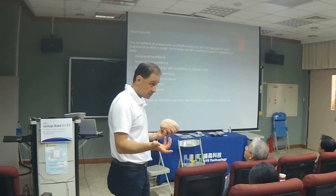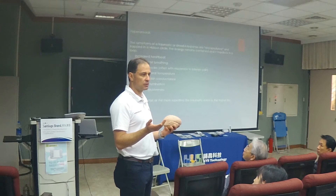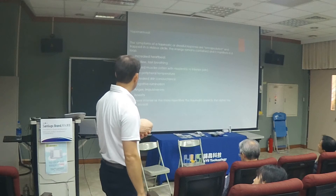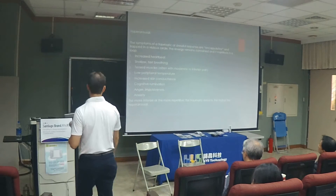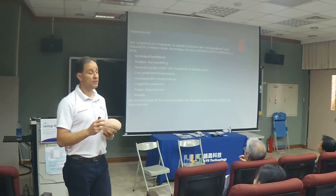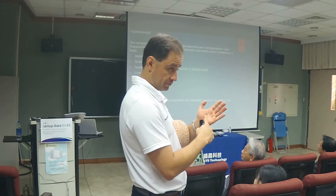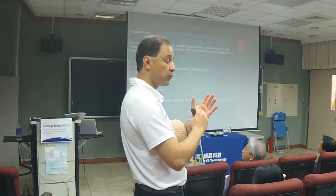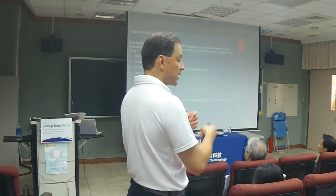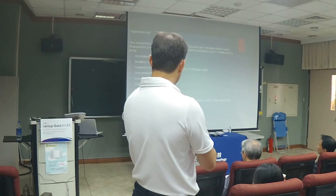Alpha theta can be useful too, but you cannot do alpha theta with everyone. Are you familiar with alpha theta neurofeedback — the Peniston protocol? We'll talk about it. How does hyperarousal manifest? Increased heartbeat, fast breathing, tense muscles, low peripheral temperature, increased or lower skin conductance. If you're measuring GSR — galvanic skin response — and you see no response, it could mean dissociation or deep trauma. It can go both ways: either too high or no response. Also cognitive rumination, fretting, anger, impulsiveness, and anxiety.